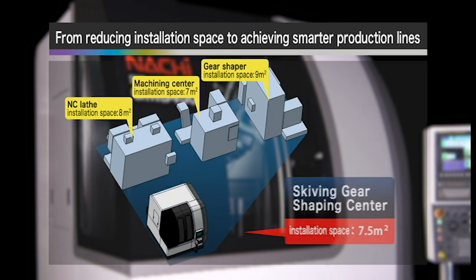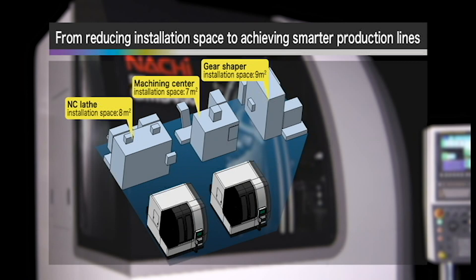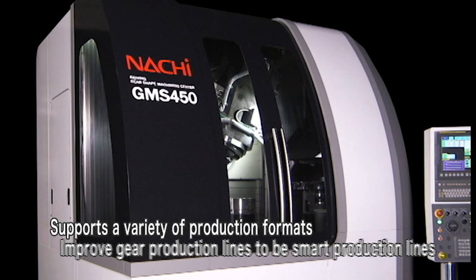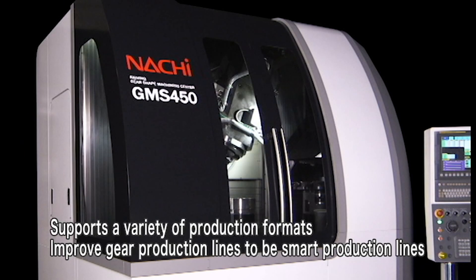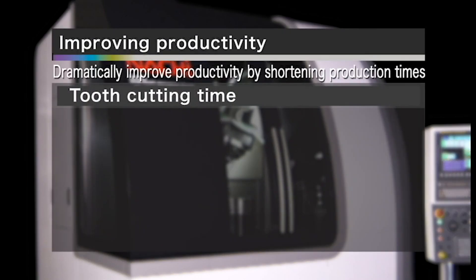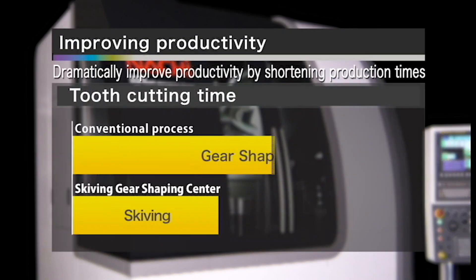By installing the GMS450, you can handle a variety of production formats and convert your gear production line into smart production lines. By using a skiving process, you can get more than double efficiency compared with conventional gear shaping.